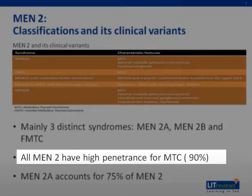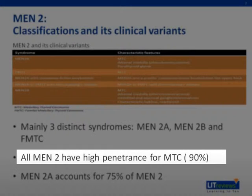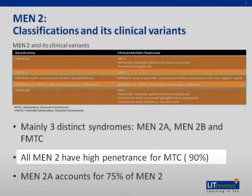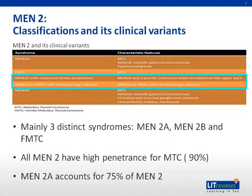In both MEN2A and 2B, medullary thyroid carcinoma occurs in almost all patients. There are some variants of MEN2A: one cohort is associated with cutaneous amyloidosis and the other with Hirschsprung's disease.